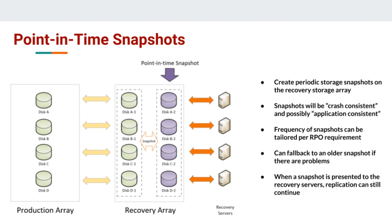Those are the disks that are constantly being replicated to from production. So the green copy on the recovery array are the disks that are in sync with the reciprocal disks on the production side. What you'll do on the recovery array is periodically take a snapshot of your replicated disks. That snapshot represents the state of those disks at the point in time when you took the snapshot.